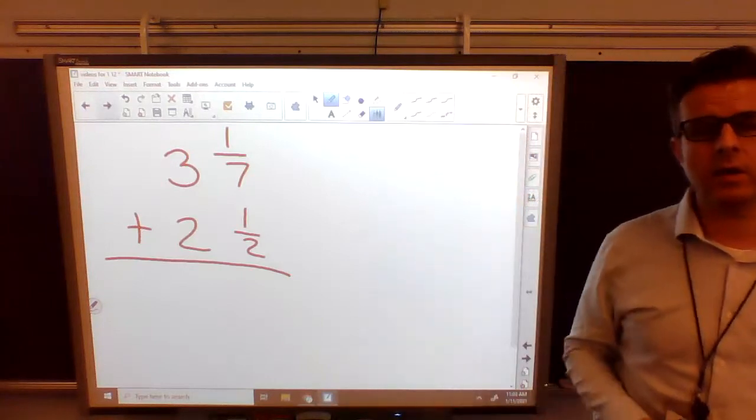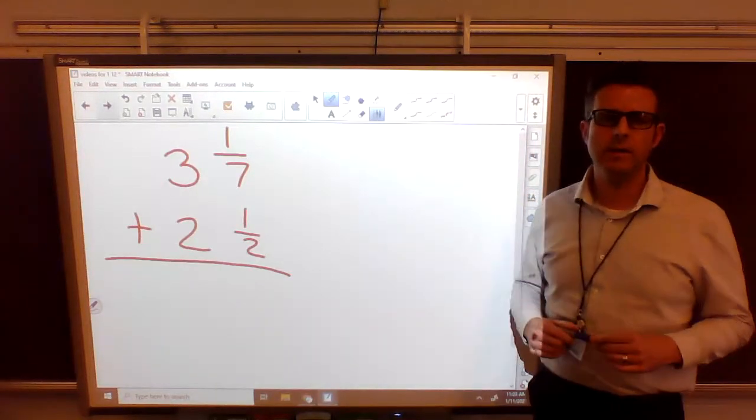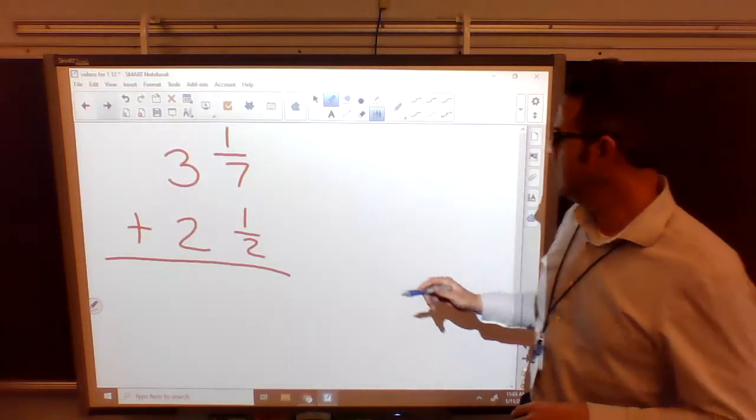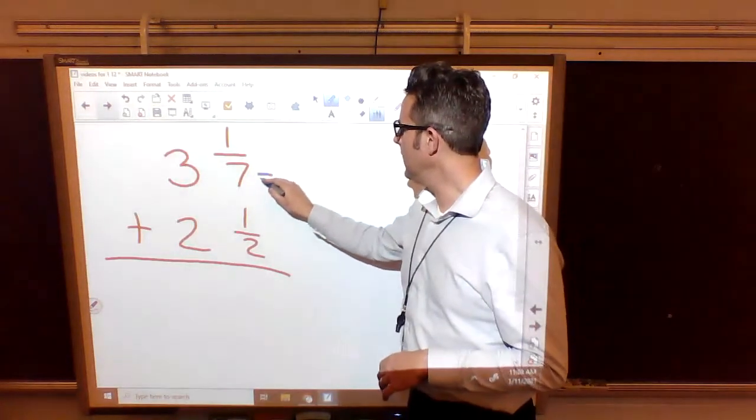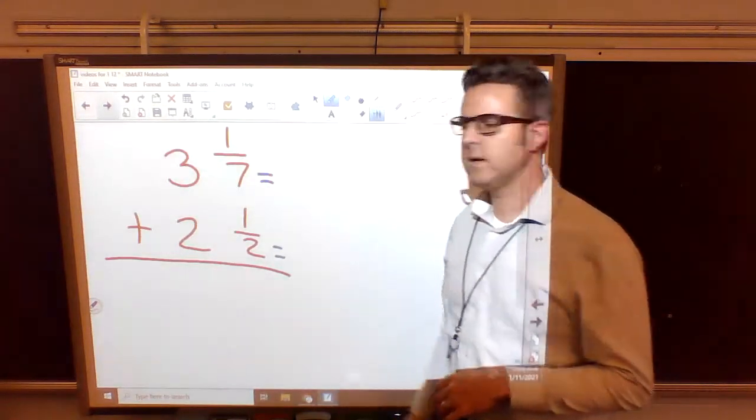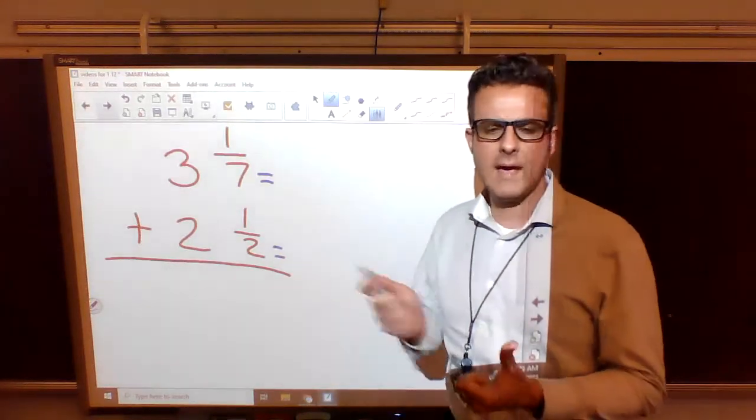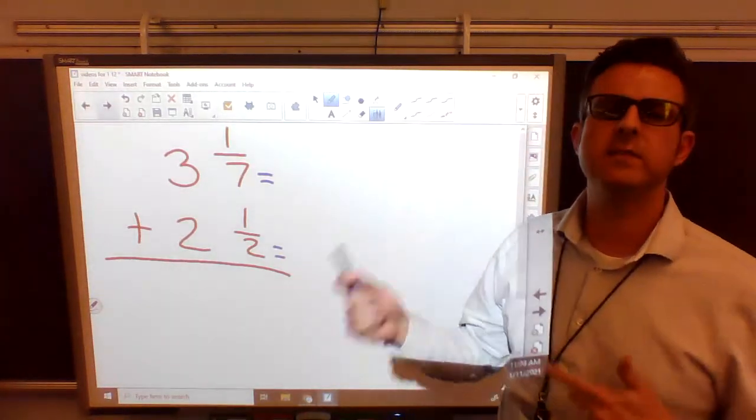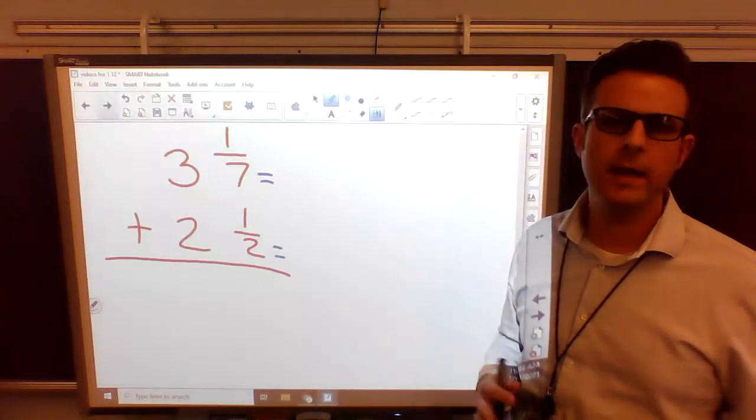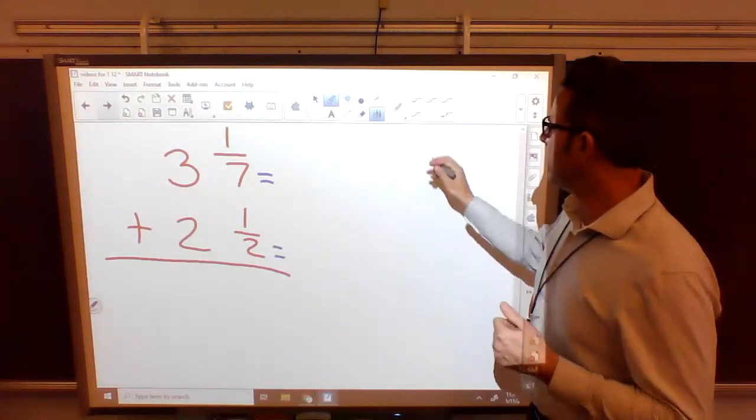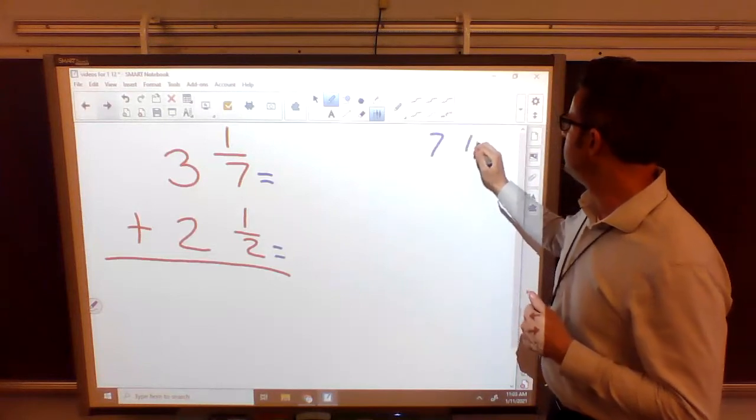All right, so we're going to start off with our fraction side. We have 3 and 1/7 plus 2 and 1/2. As we can see, our 7 and our 2, they're not equals. The bottom numbers don't equal. We have to make them equal. So we have to skip count by 7s, skip count by 2s and see what's the first number that appears in both of them. Well, if I count by 7s, I get 7, 14.